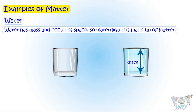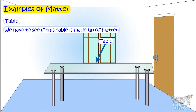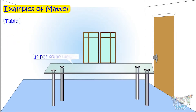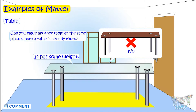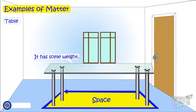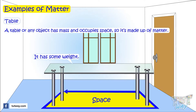Now here is another thing — a table. We have to see if this is made up of matter, and for that we have to prove it has mass and it occupies space. Weigh the table — it has weight. Now can you place another table at the same place where a table is already there? No, you cannot. So the table occupies space. So a table or any solid object has mass and occupies space — so it is made up of matter.